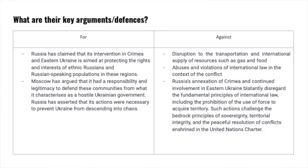Here are some key arguments against Russia's invasion of Ukraine. First is the violation of international law. Critics assert that Russia's annexation of Crimea and its continued involvement in Eastern Ukraine contravene the fundamental principles of international law, including the United Nations Charter, which prohibits the use of force to acquire territory, and Ukraine's sovereignty and territorial integrity. The referendum in Crimea was deemed illegitimate due to its lack of independent oversight and dubious circumstances, and the international community largely viewed it as coerced and lacking transparency.